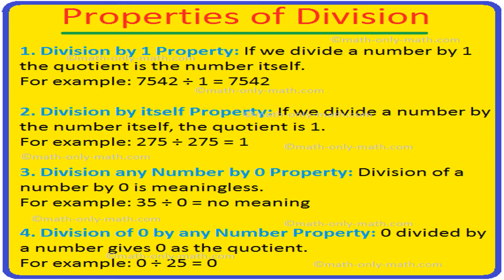Next, let us learn about the properties of division. First is the division by one property. If we divide any number by 1, the quotient is the number itself and the remainder is 0.